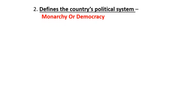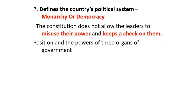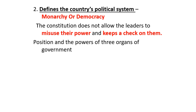Moving on to the next importance of the constitution: the constitution defines the country's political system. In the constitution, it is clearly written whether we are following a monarchical form of government or a democratic form of government. Monarchy means when a government is under the rule of a king. A democratic form of government is one where people are ruling the country and have the right to vote. For example, the United Kingdom follows a monarchical form, and India follows a democratic form of government. The constitution does not allow leaders to misuse their power, because it mentions all the rules and regulations and keeps a check over them.